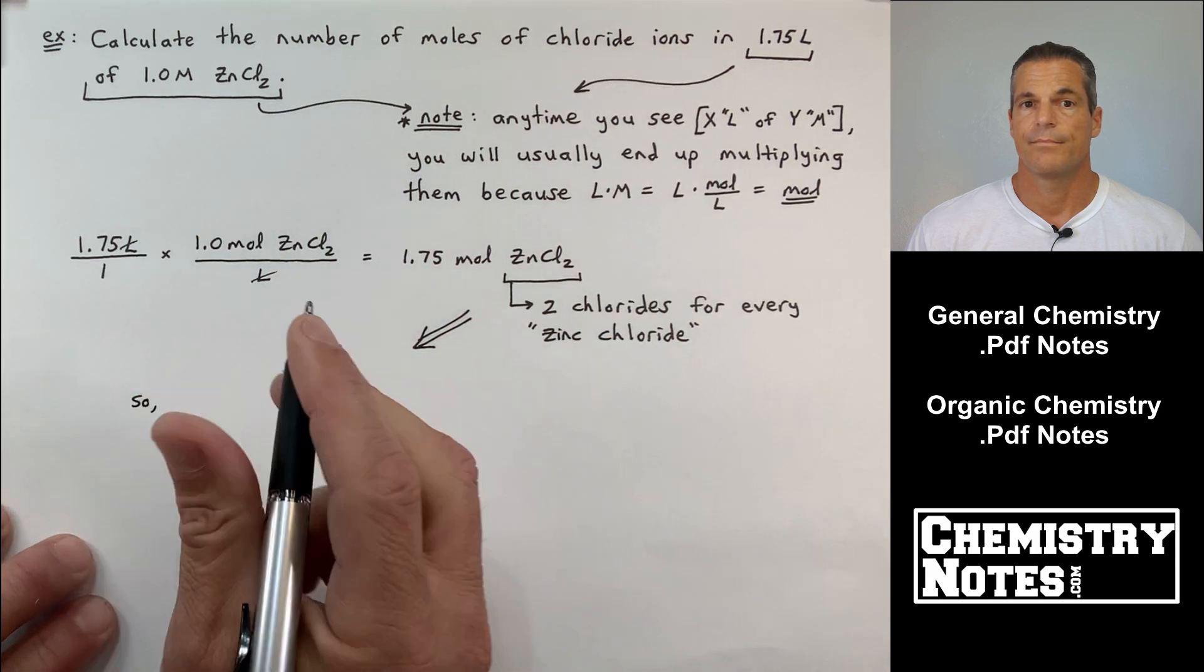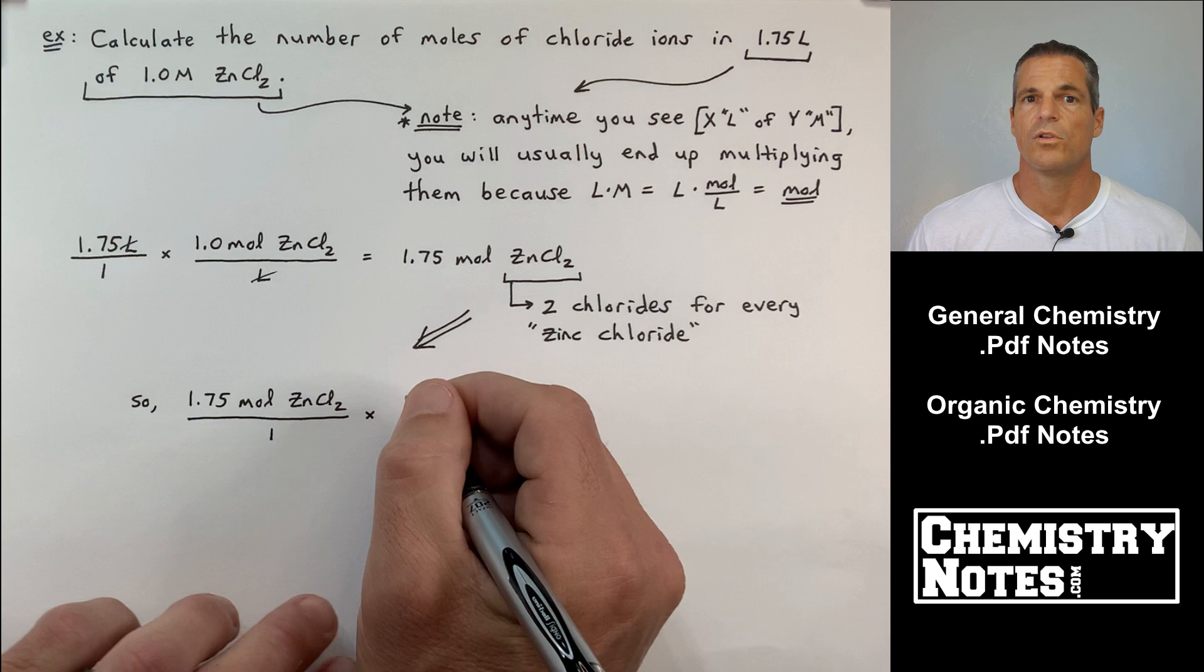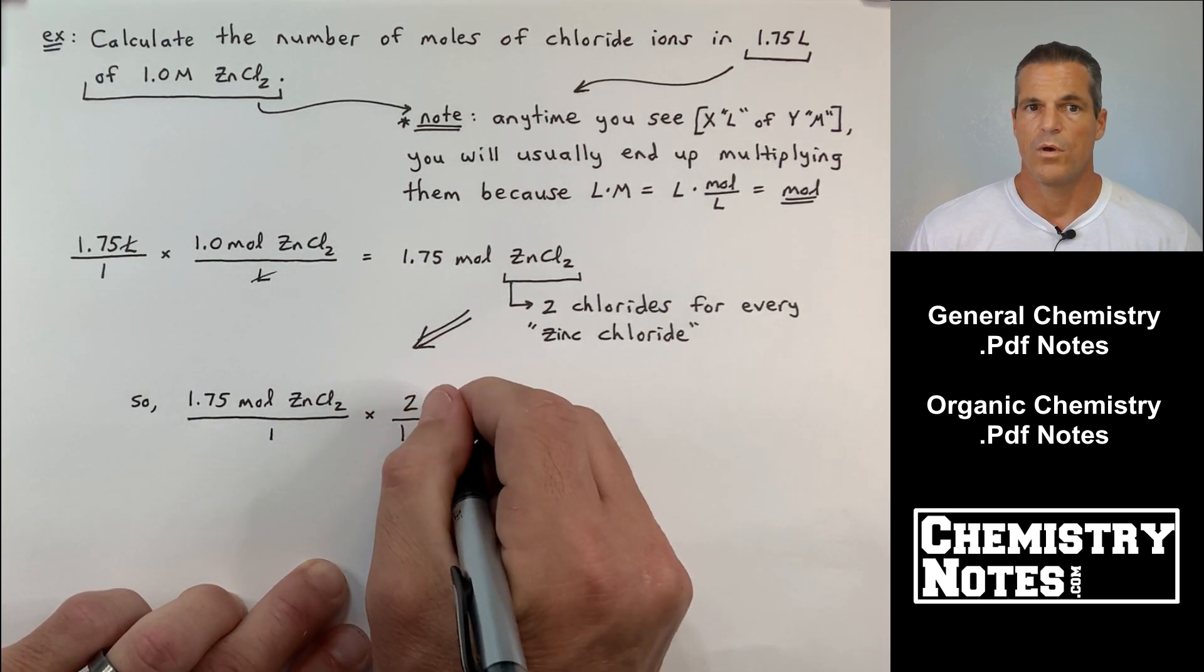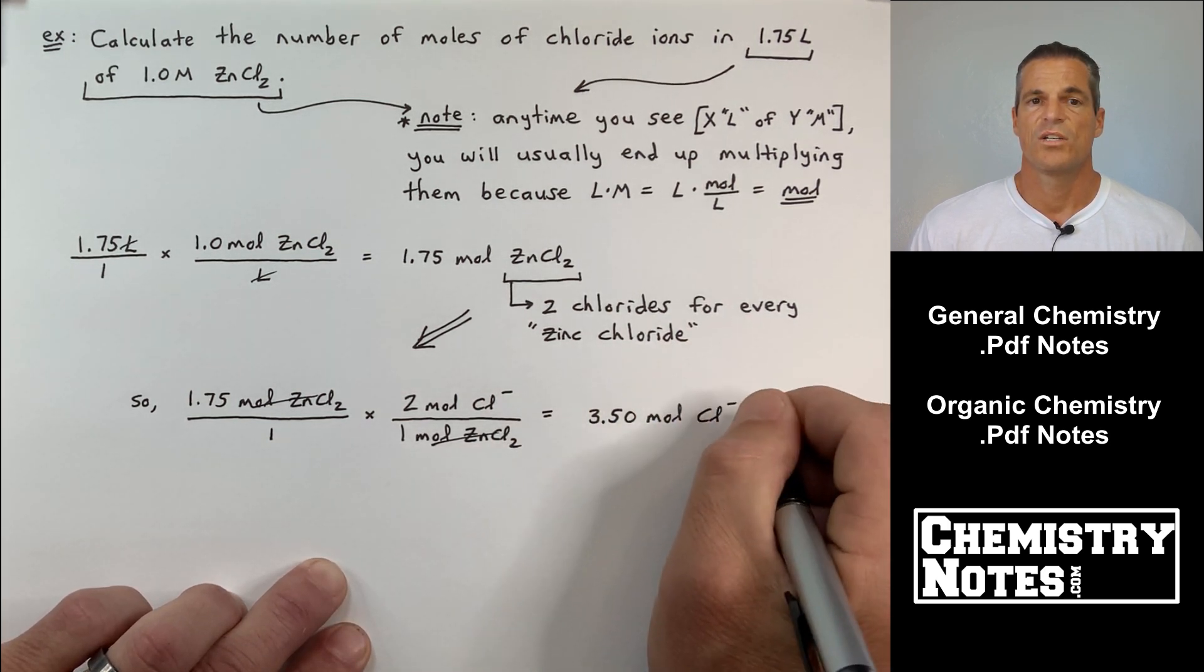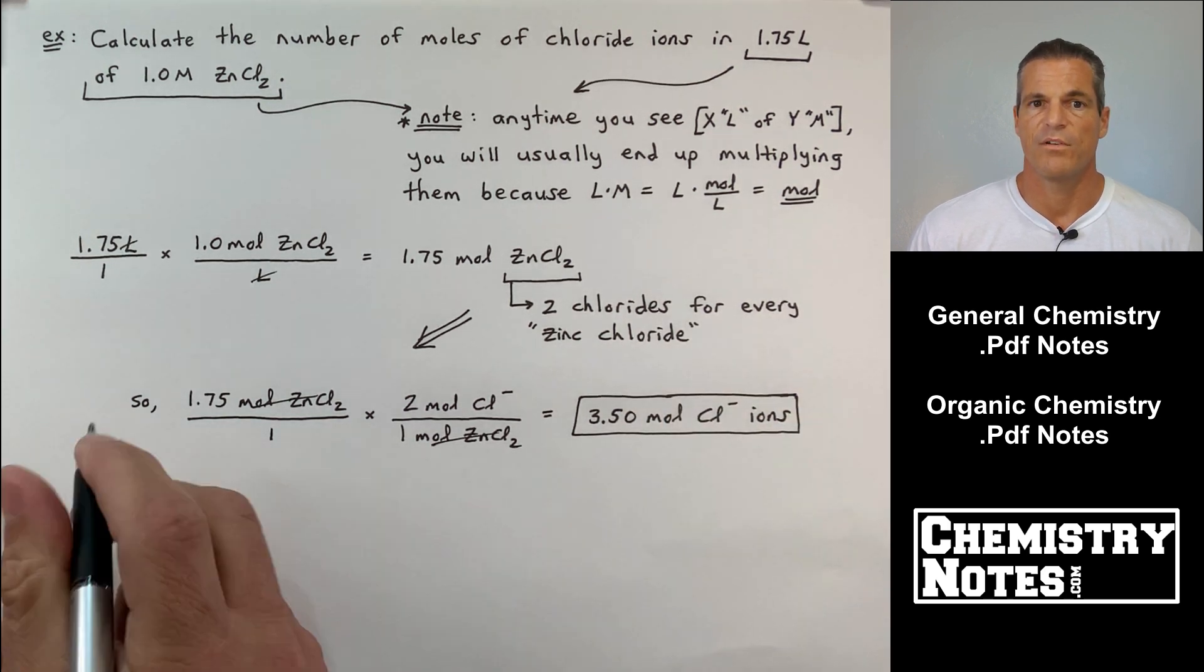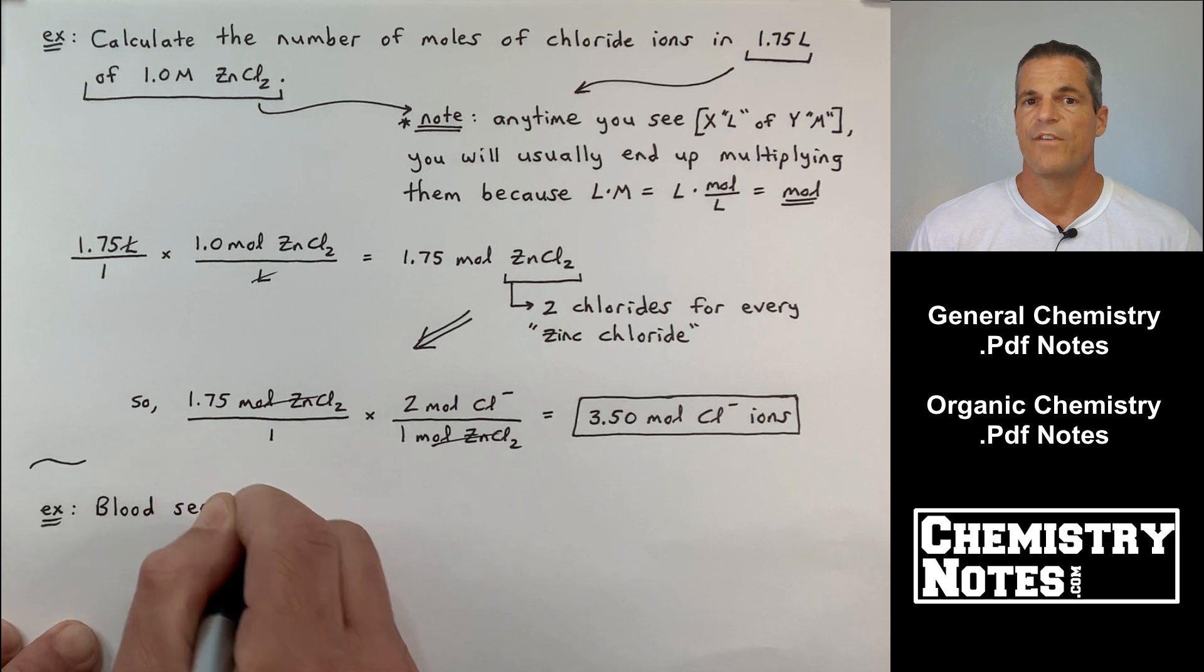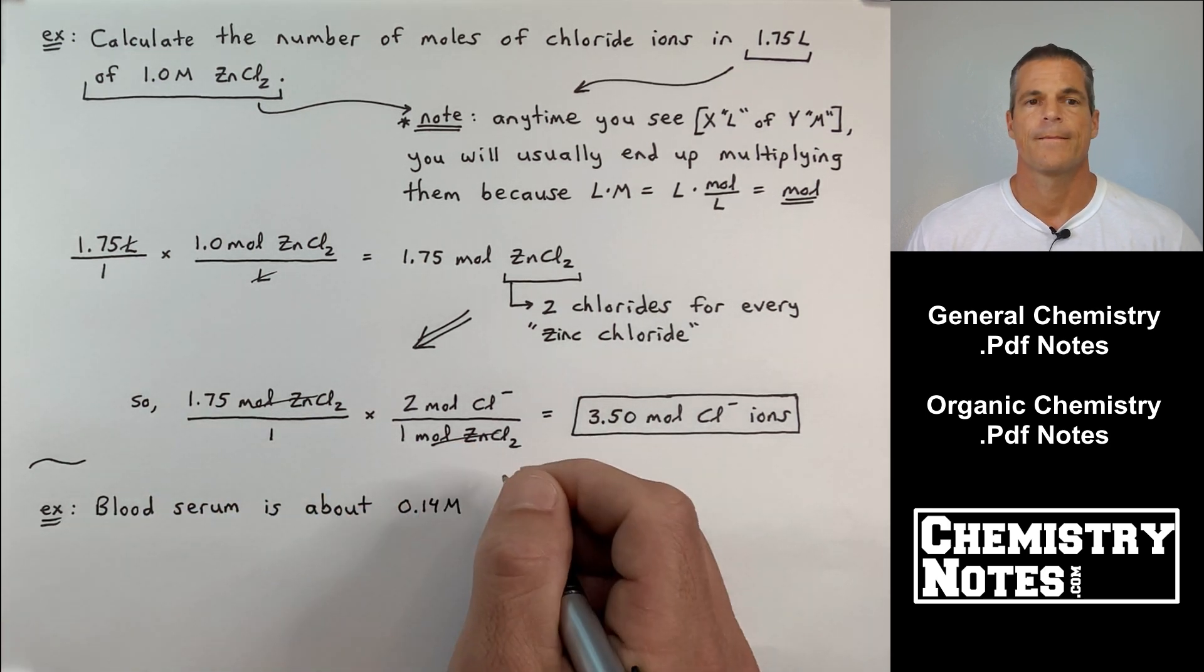All right, now it didn't want the moles of ZnCl2, it wanted the moles of chloride ions. So start with what you're given, put it over 1, 1.75 moles of ZnCl2, and there are 2 moles of Cl- for every 1 mole of ZnCl2. We end up with an answer, 3.50 moles of Cl- ions.